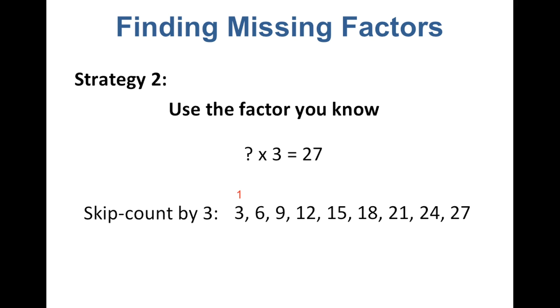So let's count them. 1, 2, 3, 4, 5, 6, 7, 8, 9. We counted 9 times, so that question mark number must be a 9. We fill that in and we read it as 9 times 3 equals 27. We check our work and it does make sense. It is correct. 9 times 3 does equal 27. We found our missing factor.